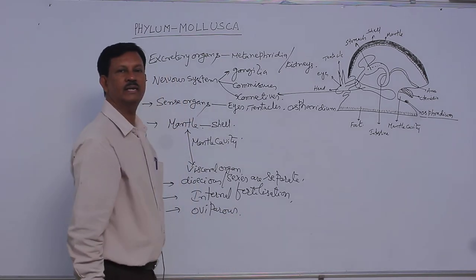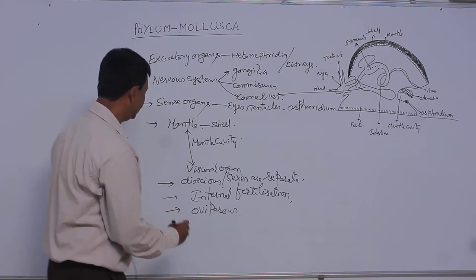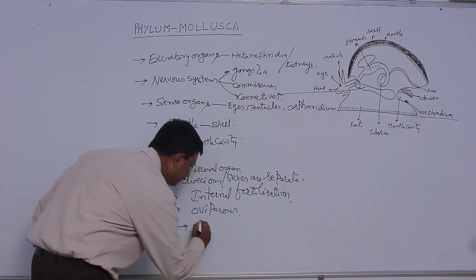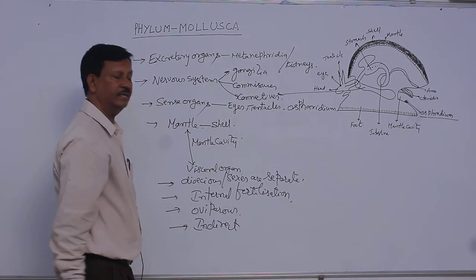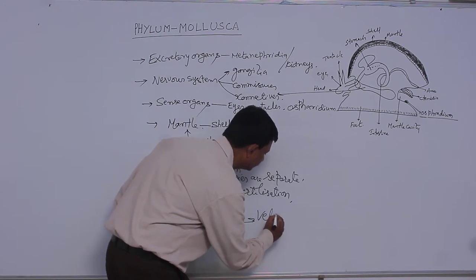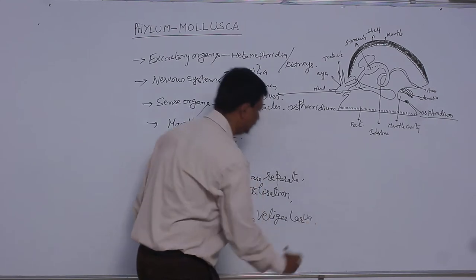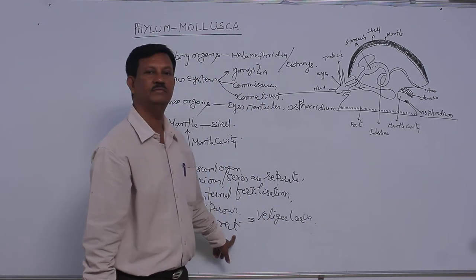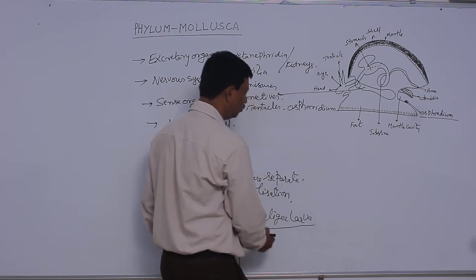Mostly oviparous animals, they lay eggs. And development is direct and indirect, both are present. In the indirect development, the ciliated larva known as the veliger larva. This veliger larva is present in the life history. This veliger larva is the modified trochophore larva.